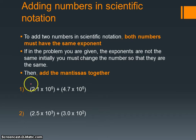If we want to add these two numbers, 2.1 times 10 to the 5th plus 4.7 times 10 to the 5th, we have 10 to the 5th and 10 to the 5th, so this is good to go. We simply add up the mantissas. 2.1 and 4.7 gives us 6.8 times 10 to the 5th.